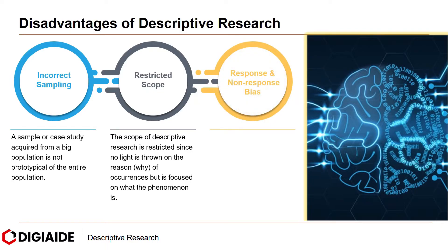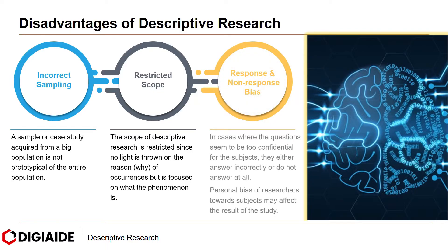And finally, the issue of response and non-response bias. In cases where questions seem to be confidential for the subjects being studied, they either answer incorrectly or do not answer at all. Personal biases of researchers towards the subjects being studied may affect the result of the study.